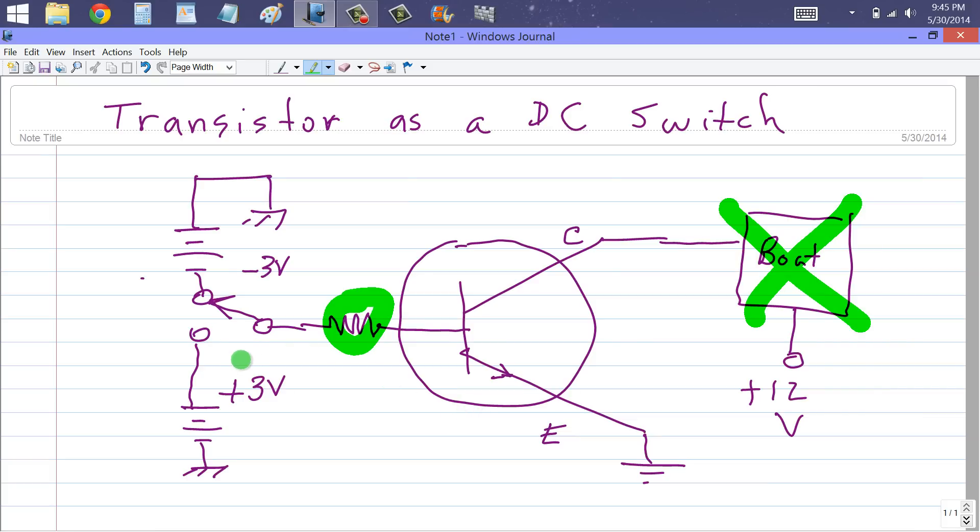When you switch that over to the positive 3 volts, this transistor conducts pretty much perfectly because it's in a state of saturation. When you have the switch over here at the minus 3 volts, it's in a state of cutoff. No current flows.